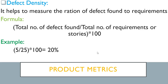Next is defect density. It helps to measure the ratio of defects found against your requirements. The formula is: total number of defects found divided by total number of requirements or user stories, multiplied by 100. Since defects always work against requirements, it's divided by total number of requirements — or in an agile process, you can compare to stories. For example, 5 defects found divided by 25 total stories, multiplied by 100, gives a defect density of 20%.